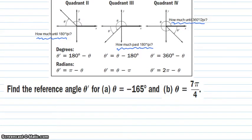So find the reference angle for (a) θ equals negative 165, and (b) θ equals 7π over 4. So we're going to do 1 in degrees and 1 in radians. So I have a negative angle. Typically it's not the easiest to work with a negative angle, so let's figure out what the coterminal is. So if I do negative 165 plus 360 to find its coterminal angle, we are coterminal with 195.